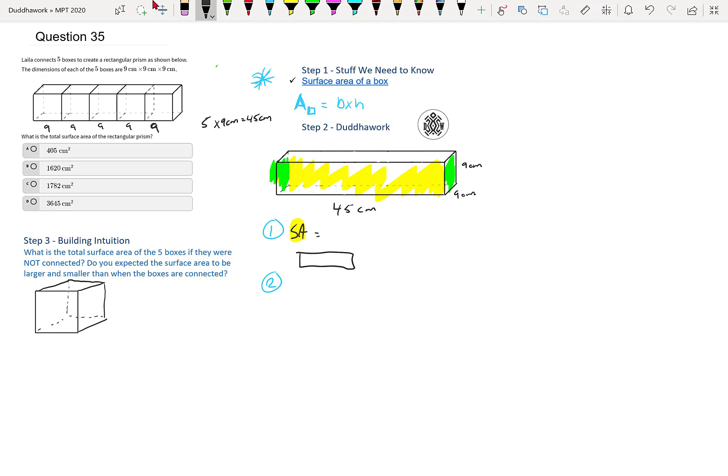So I'll write the surface area of the yellow is equal to the base times the height. So let's do a little drawing here. We have four times, because if we go around the box, we have four times the area of 45 x 9.